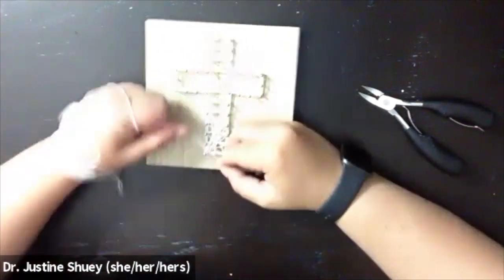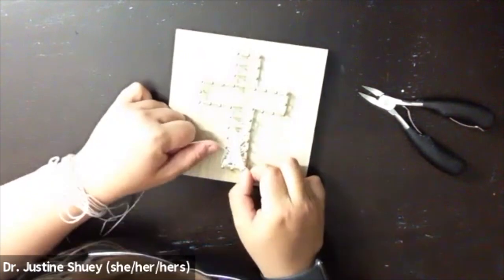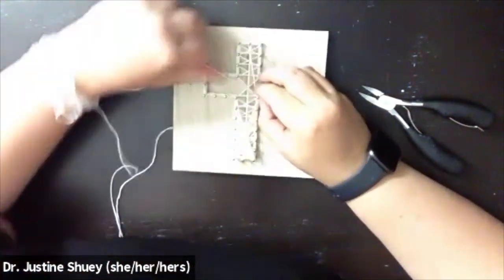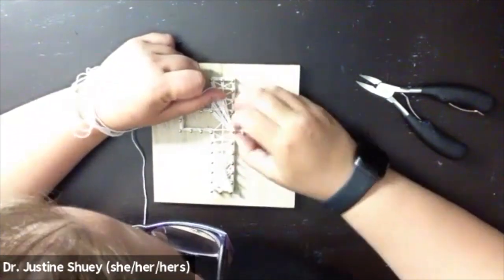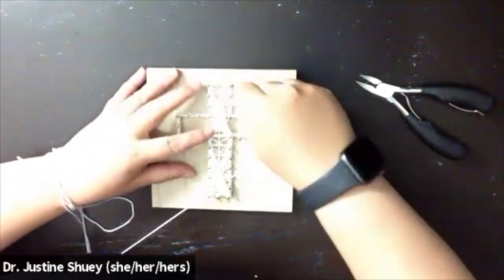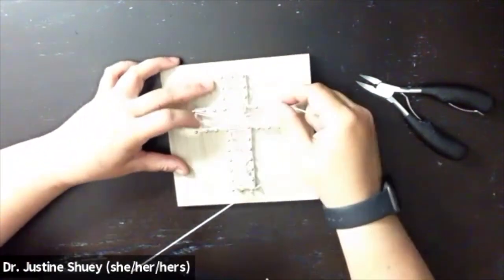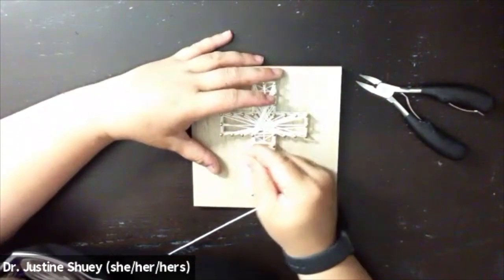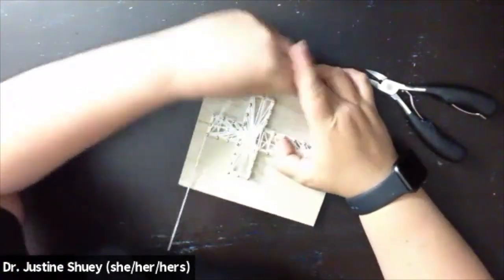I'm pushing down my string as I go through in order to make some more space at the top of the nail to wrap more string around. Now I'm going across and diagonal along the top and then I'm going to go across on the sides of the cross, filling that all in until I run out of string.